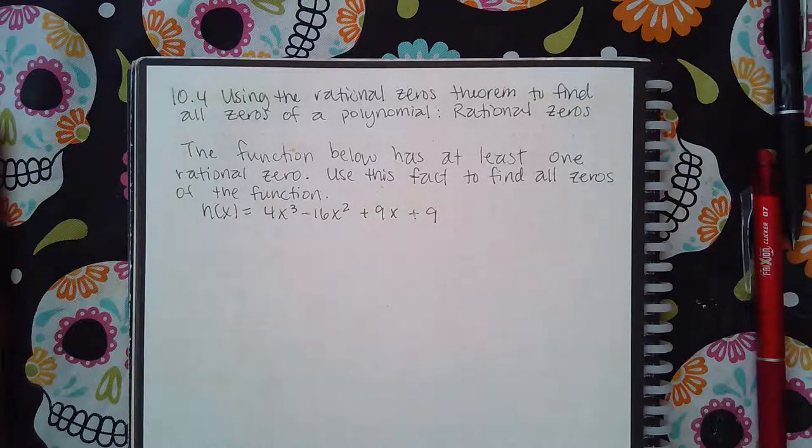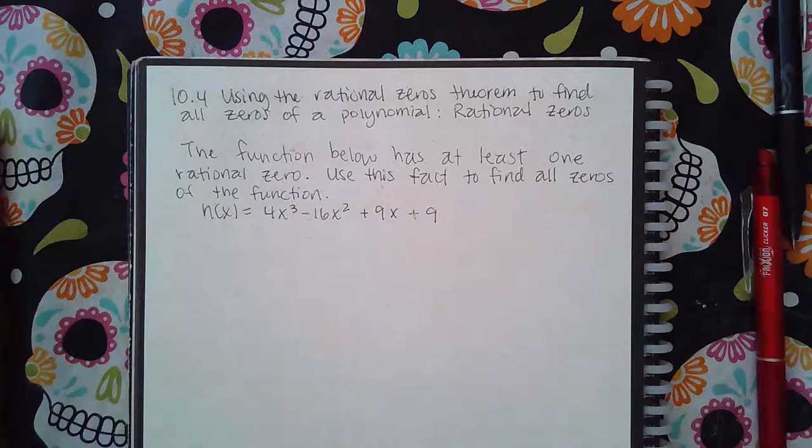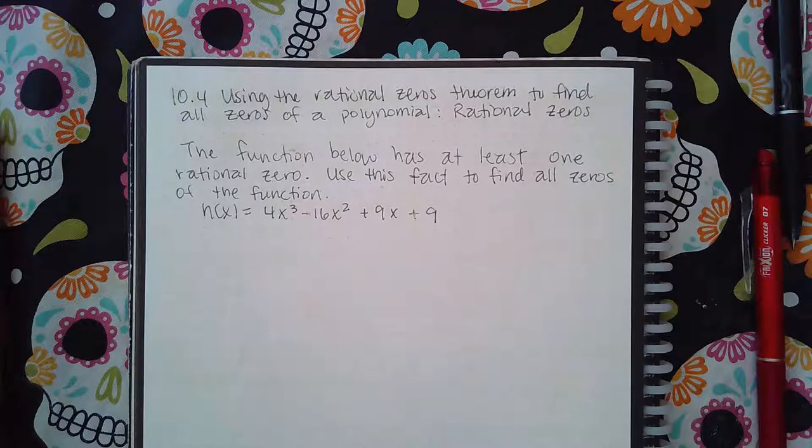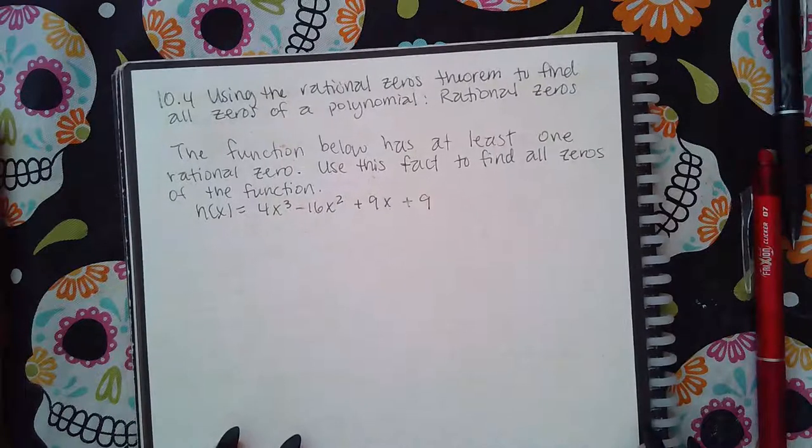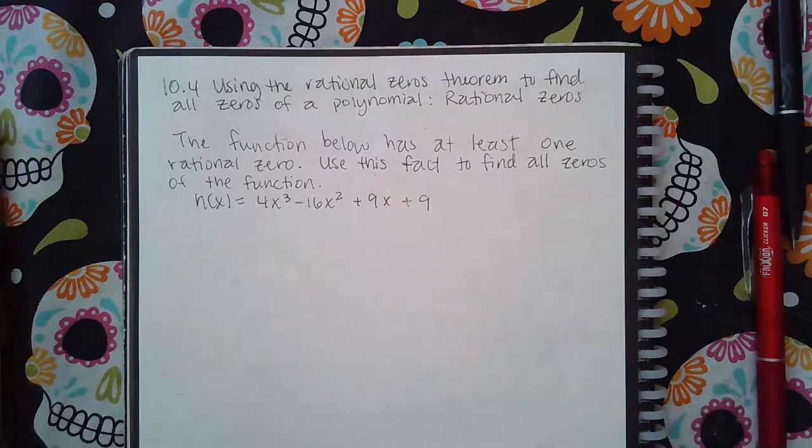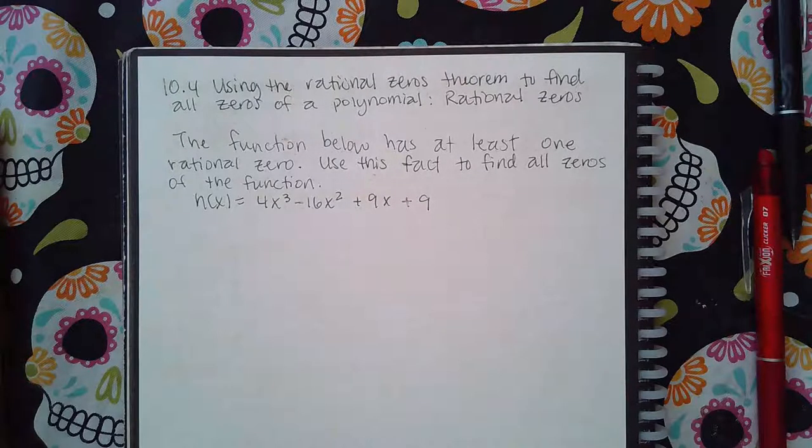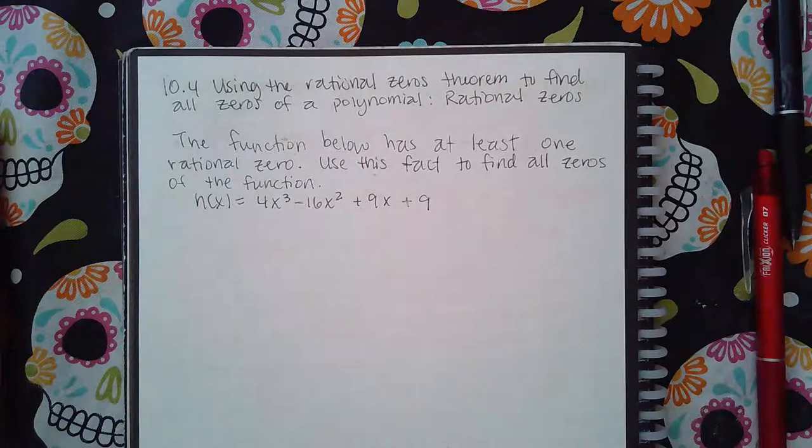Here we have 10 points for using the rational zero theorem to find all zeros of a polynomial and we're finding the rational zeros. The function below has at least one rational zero. Use this fact to find all the other zeros of the function. I don't have a starting point. They didn't give me any of them to begin with. So we are going to have to go through that possible rational zeros theorem.